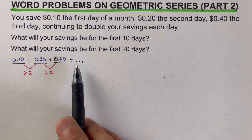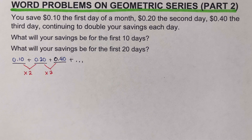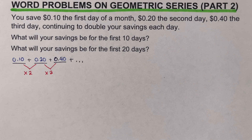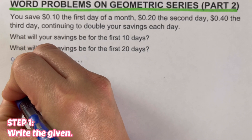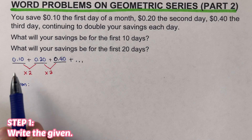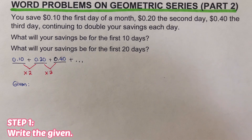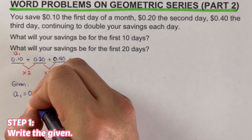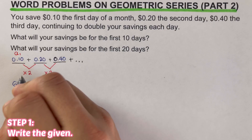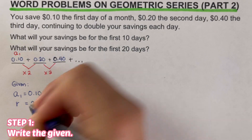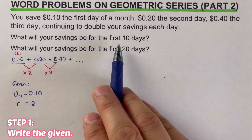If we continue this pattern, on the fourth day you'd put in 0.40 × 2 = 0.80, and on the fifth day 0.80 × 2 = 1.60, and so on. The first step is to write the given values. From the problem, our first term a₁ = 0.10. We also have our common ratio — the value we multiply each time — which is r = 2.